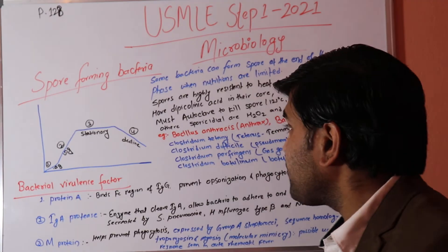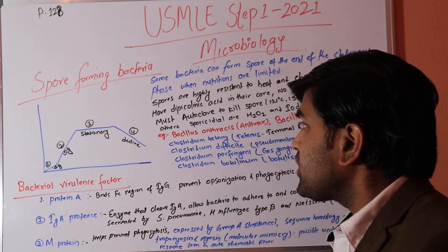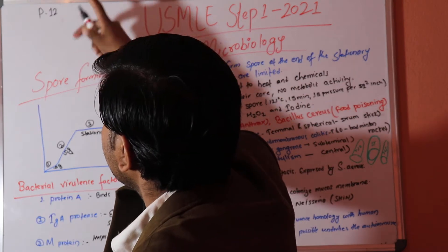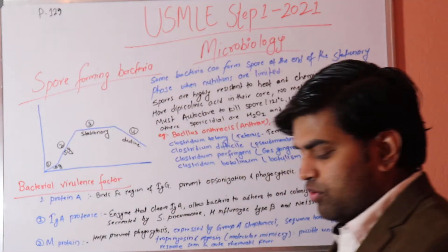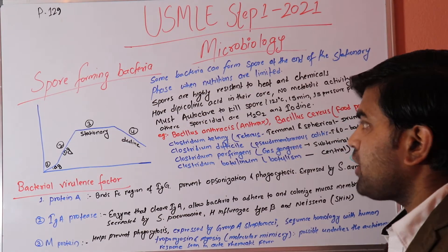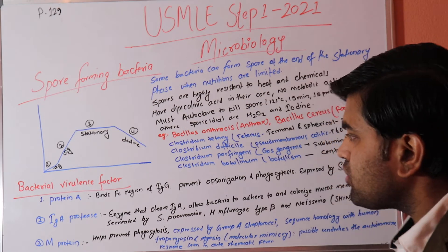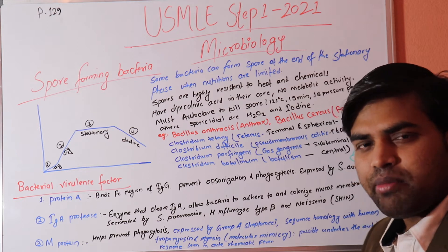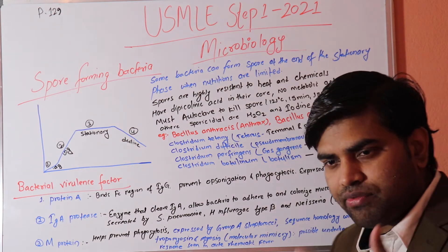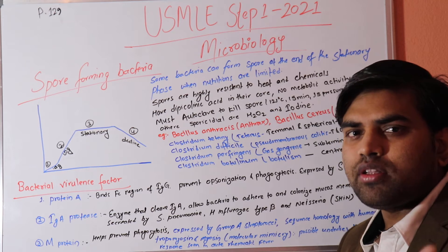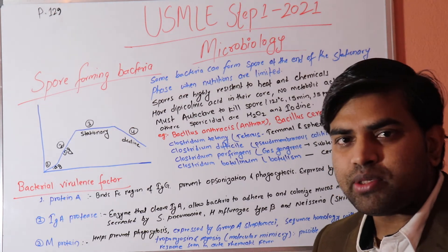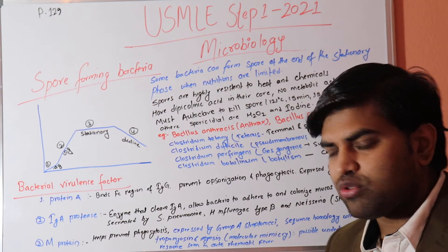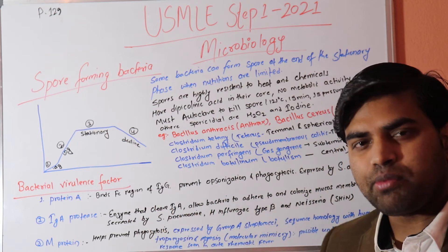Welcome everyone. Today we continue our lecture, around page 129 of USMLE First Aid Step 1 2021, the microbiological section. We are talking about spore-forming bacteria and bacterial virulence factors. We have already covered bacterial structure, identification by staining, culturing, and biofilm formation. Spore forming is itself a virulence factor for some bacteria.